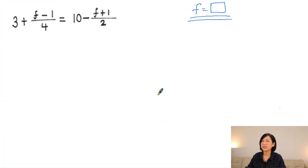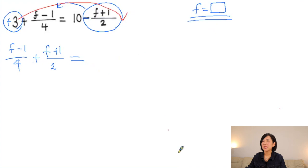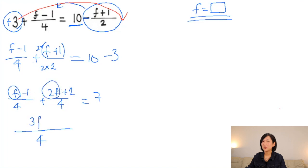Rearrange the terms: undo the minus f/2 + 1/2 by adding it to move all fractions to this side, giving 10 on the right. Then move the number by undoing plus 3, which is subtract 3. Now we have fractions on one side and numbers on the other — easier. Adding these fractions with a common denominator of 4: (f − 1)/4 then multiply the second fraction by 2 to get (2f + 2)/4, giving (3f + 1)/4 = 7.